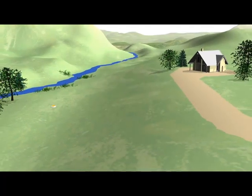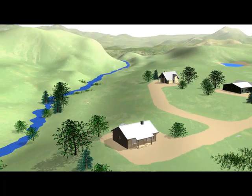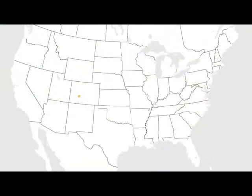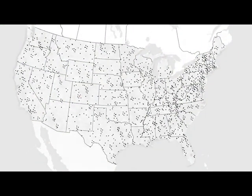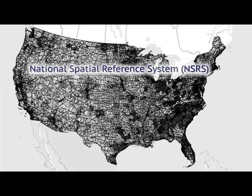When adjoining properties share these common starting points, it's easier to align them properly on a map. And when we all use a network of these marks spanning the continent, we share one national spatial reference system.